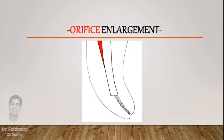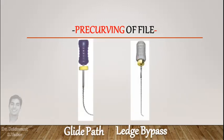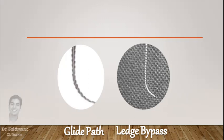The orifice should be enlarged to facilitate the insertion of the file in the canal. The wall opposite to the direction of curvature should be straightened. The file should be pre-curved before insertion. Pre-curving for ledge bypass is different than pre-curving for glide path, as in this case only the apical 2mm of the file should be bent.